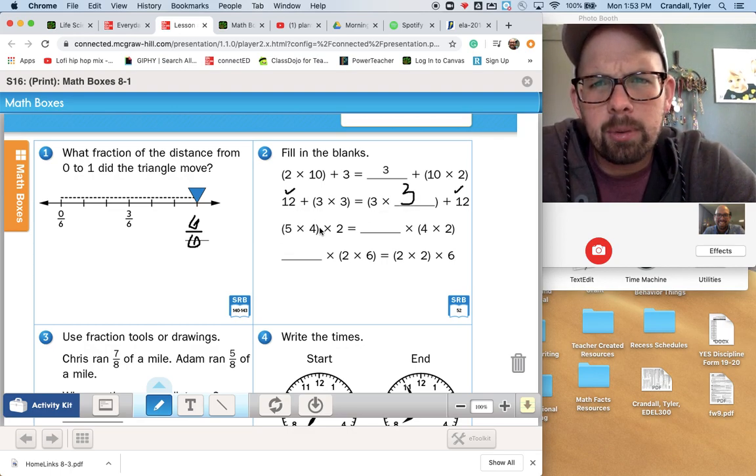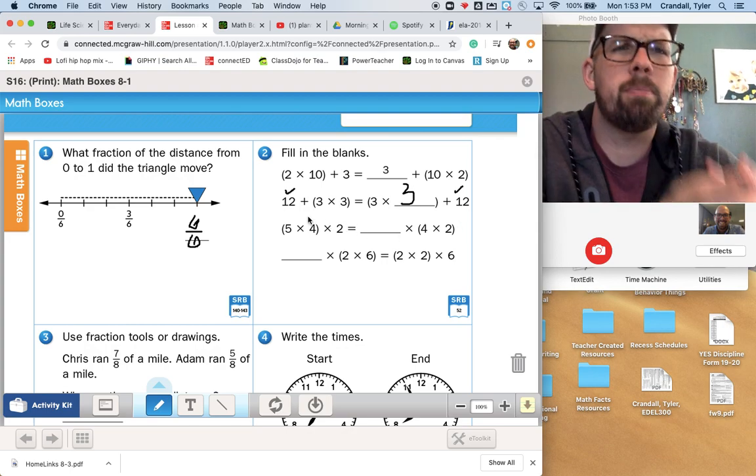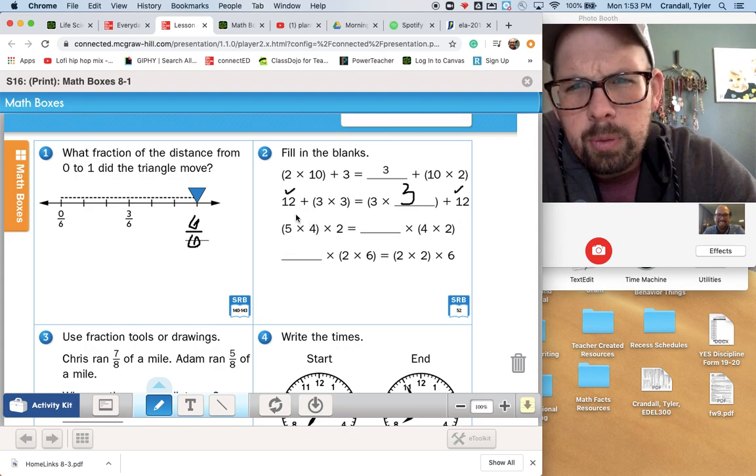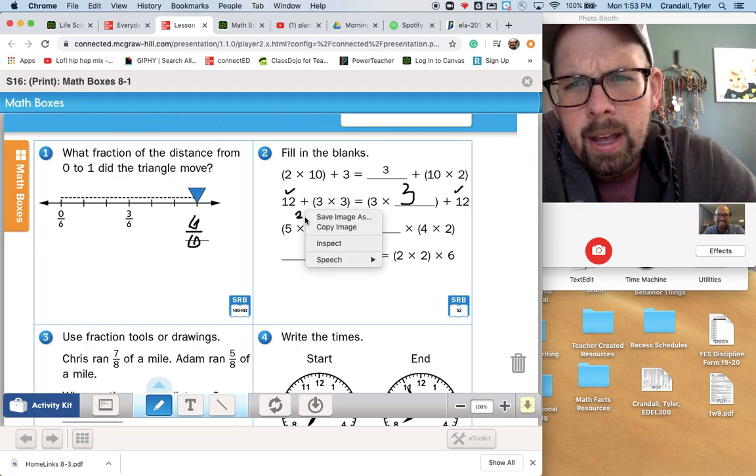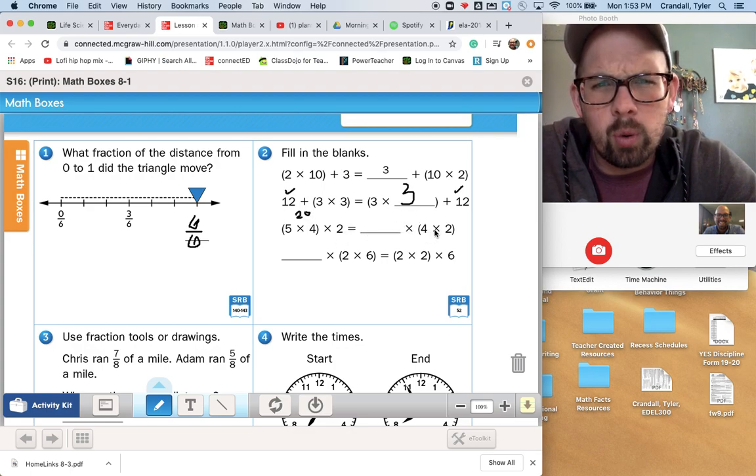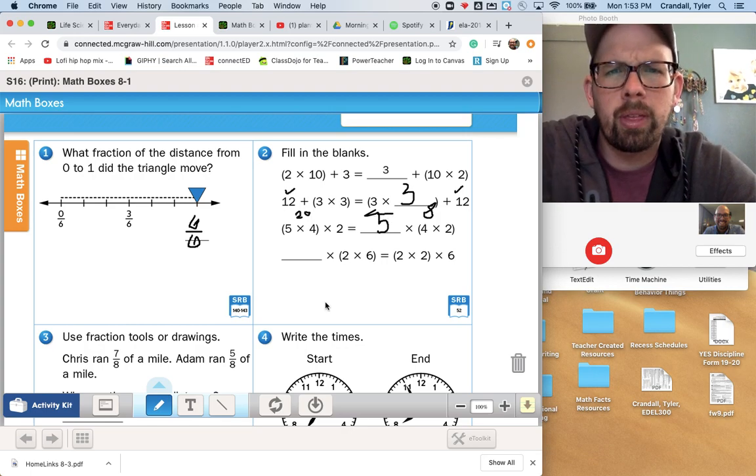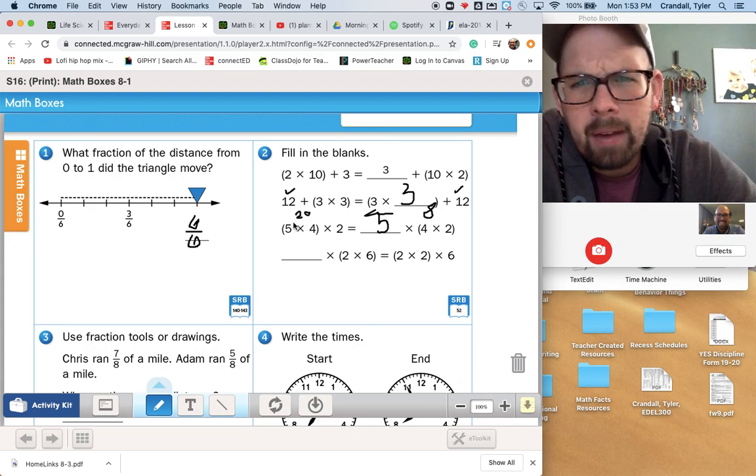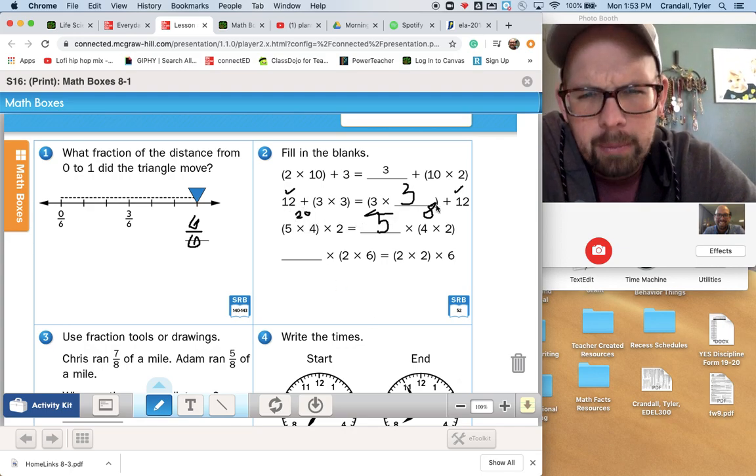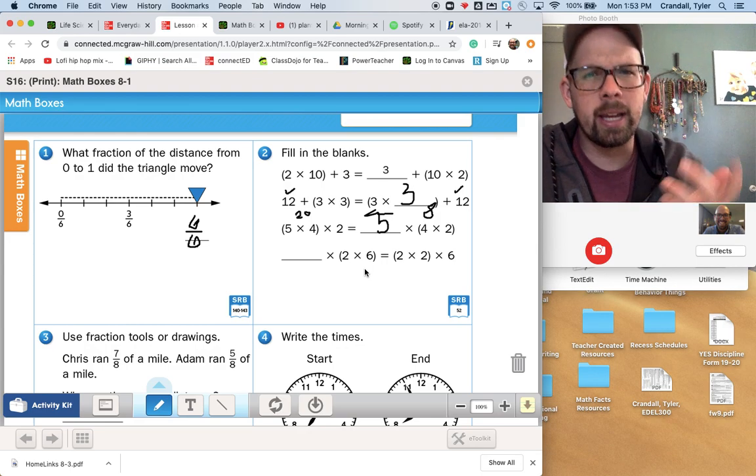This one says 5 times 4 times 2 is the same thing as something times 4 times 2. Now this one has some parentheses. So I could do 5 times 4 first, which would be 20. And 20 times 2 would be 40. And here I've got in parentheses 4 times 2 is 8. Something times 8 equals 40, and that would be 5. In this case, the parentheses don't actually matter that much because it's all multiplication, and you could multiply in any order.